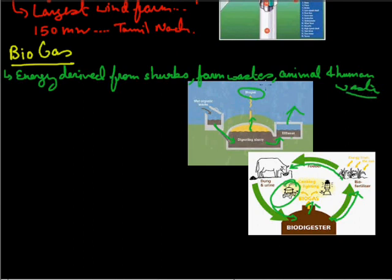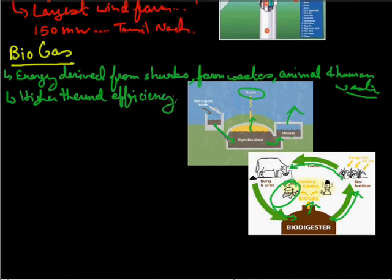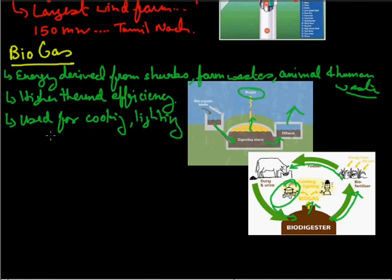The energy is derived from shrubs, farm waste, animal and human waste. It has a higher thermal efficiency in comparison to the kerosene, dung cake and charcoal. Energy produced can be used for, as we already discussed, for the cooking purposes specially and also for lighting. And the residual can be used as a manure. And as we know that more than 70% of India lies in rural area, so here we easily get these all things, especially the cow dung. Maximum number of the population of the animals or the cattle are in India, so this is the best source of energy in India.